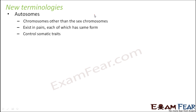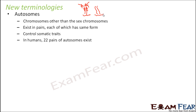Members of a pair of autosomes have the same form. For example, if one pair of autosomes corresponds to eye color, hair color, and eye shape, both autosomes in that pair will have genes in the same form — one inherited from the father and the other from the mother, but both representing the same traits. However, two different pairs of autosomes will not necessarily have the same form. In humans, 22 pairs of autosomes exist, giving a total of 44 autosomes.